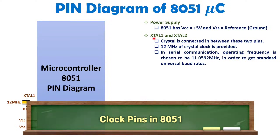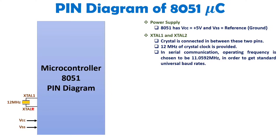Another two terminals, XTAL1 and XTAL2, are used to provide a crystal clock to the 8051. Typically, a 12 MHz crystal clock is used. However, for serial communication, we operate at 11.0592 MHz, because that frequency allows operation at standard universal baud rates such as 9600 baud with UART and other serial communication techniques.